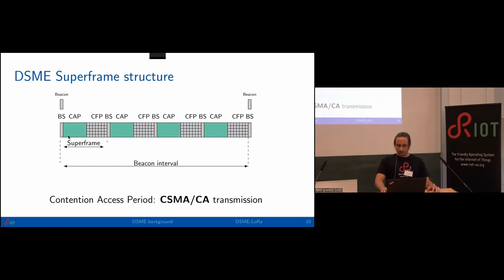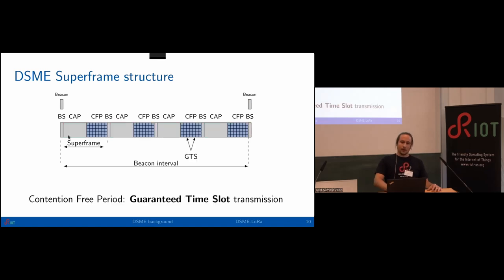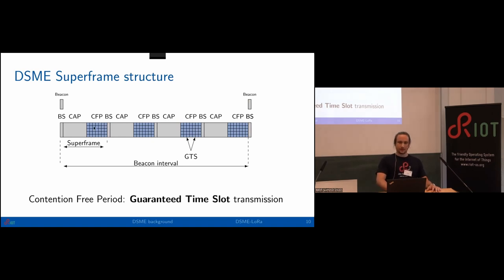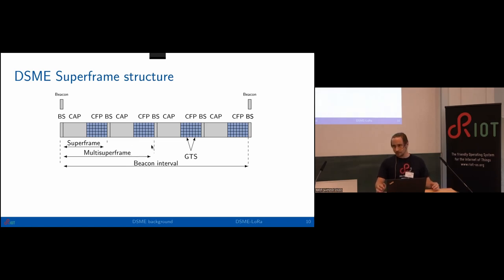During the contention access period, we can do CSMA-CA transmission for unicast, broadcast packets, and MAC commands. During the contention free period, we have guaranteed time slots similar to TSCH, where we can allocate a collision-free time-frequency slot. Each superframe has seven guaranteed time slots, each multi-channel. Seven may not be enough for many applications, so the standard allows merging superframes into multi-superframes, which is configurable. This allows us to trade off transmission latency with the number of guaranteed time slots.